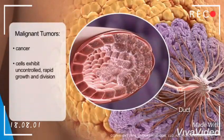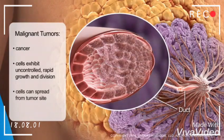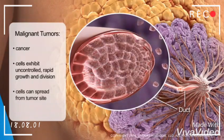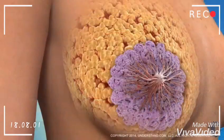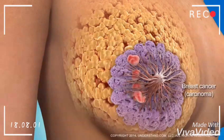Malignant tumors can spread from the tumor site and invade and harm other tissues. Breast cancer, also known as carcinoma, is a general term for various types of malignant tumors that originate in the breasts.